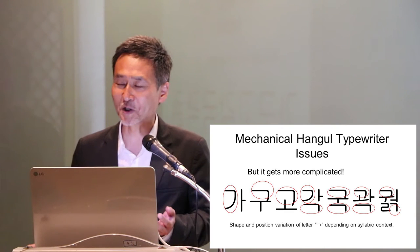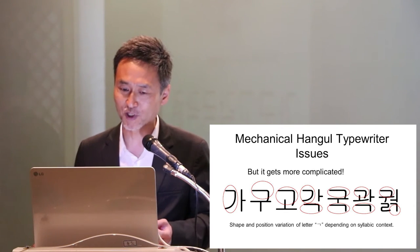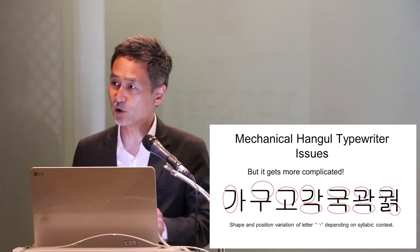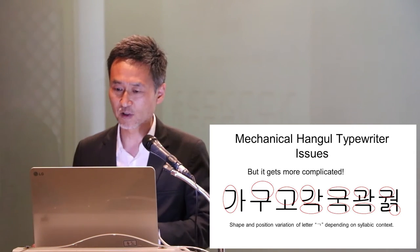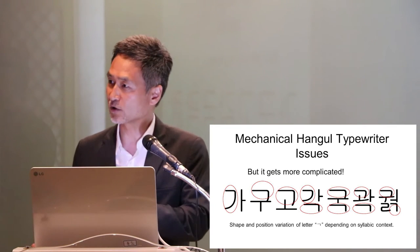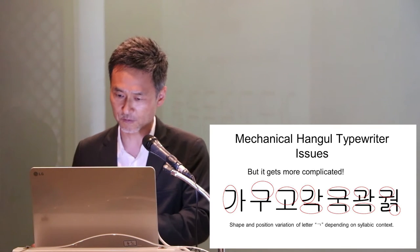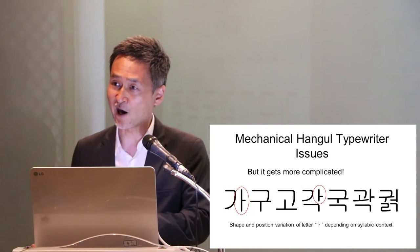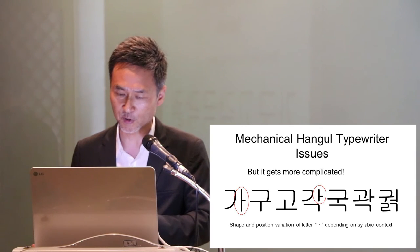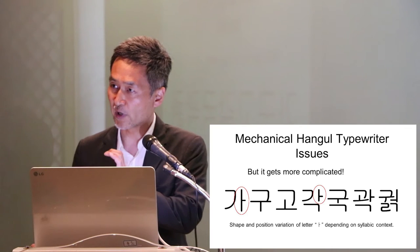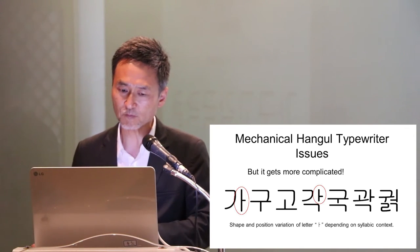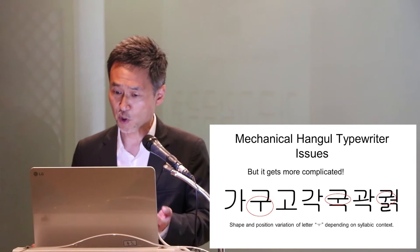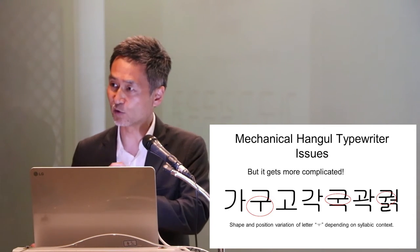The problem gets even more complicated looking at other examples. With seven Hangul syllables all containing the letter ㄱ, you can see the shapes are slightly different in every single case and their positions differ. Similarly with vowels — depending on the context, the position changes and the length of the vowel also changes. For a horizontal vowel, its position, shape, and length all change depending on context.